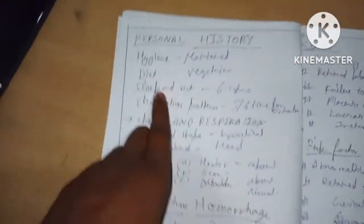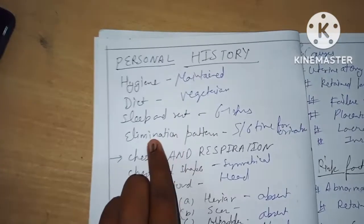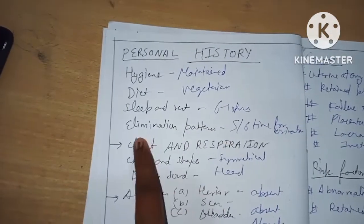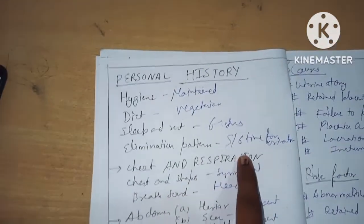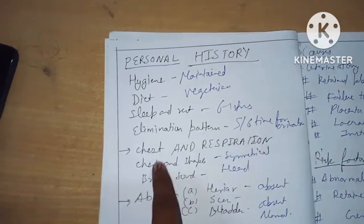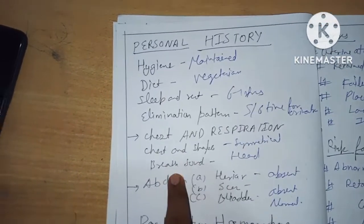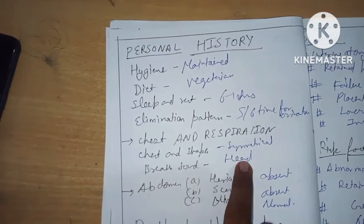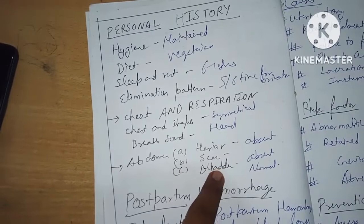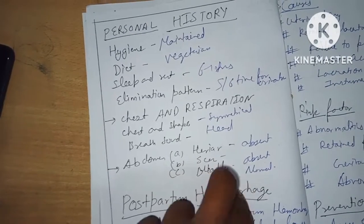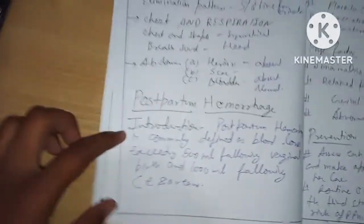Next, personal history: hygiene maintained, diet vegetarian, sleep and rest six hours, elimination pattern five to six times. Chest: shape symmetrical, breath sounds good. Abdomen: no scar, bladder absent. Next we come to the introduction of postpartum hemorrhage.